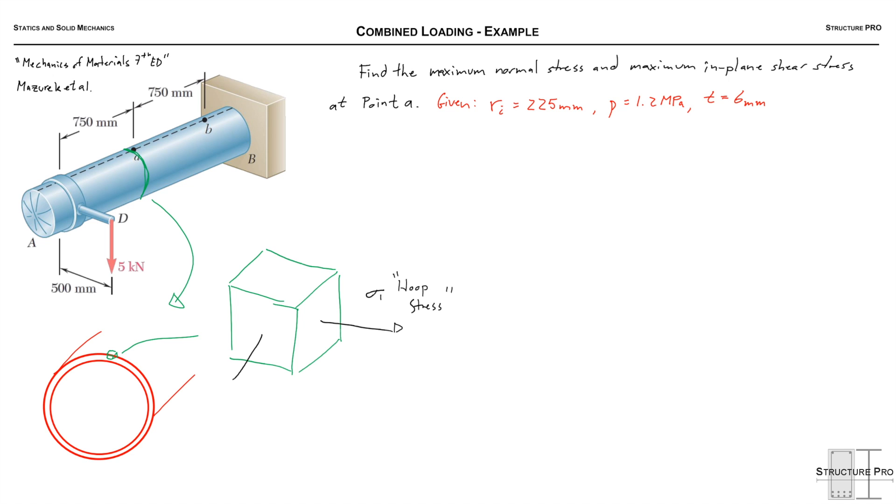Sigma 2 is the longitudinal stress due to the pressure inside the vessel. And then we also have a shear stress as a result of this 5 kN offset by 500 millimeters, so the torque that results is what gives us this shear stress along our front face.